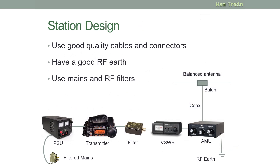Looking at good station design, we start with our power supply unit that provides the voltage to the radio. A filtered mains plug for your PSU is a good idea. You would then use a filter to filter out any frequencies that you don't want to transmit. Here is your VSWR meter and your AMU-ATU with the connection to earth. From the AMU-ATU, coax to the balun where it will convert to the balanced antenna. Using high quality cables and connectors, having a good RF earth, and using mains and RF filters where necessary is all good practice.